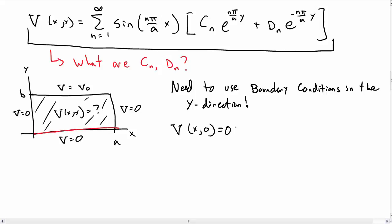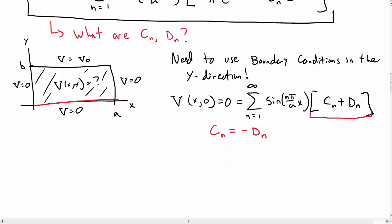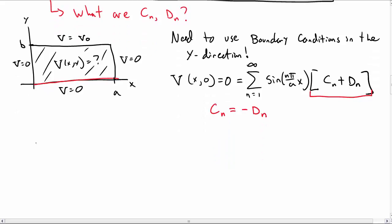So let's put y equal to 0 here in our solution. We have sin(n pi over a x) times C_n plus D_n. The only way this is 0 is if C_n is equal to minus D_n.